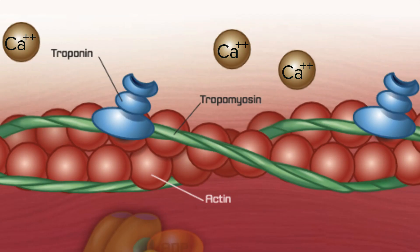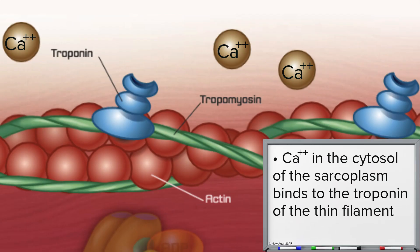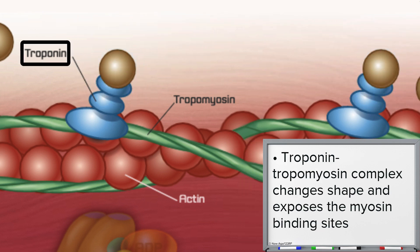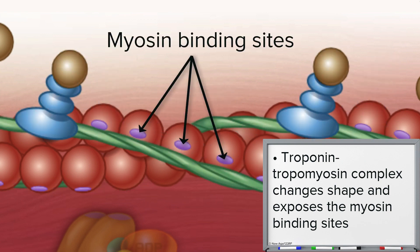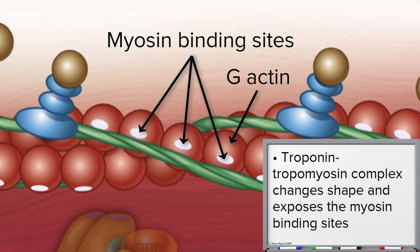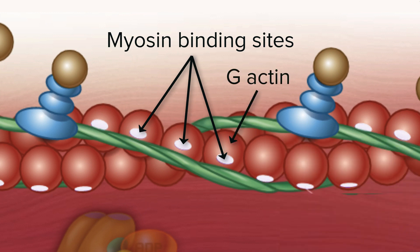Calcium ions in the cytosol can now bind to the troponin of the sarcomere's thin filaments. This binding causes the troponin-tropomyosin complex to undergo its own conformational change, exposing the myosin binding sites on the G-actin of the thin filaments. These sites are now available for binding to myosin heads.